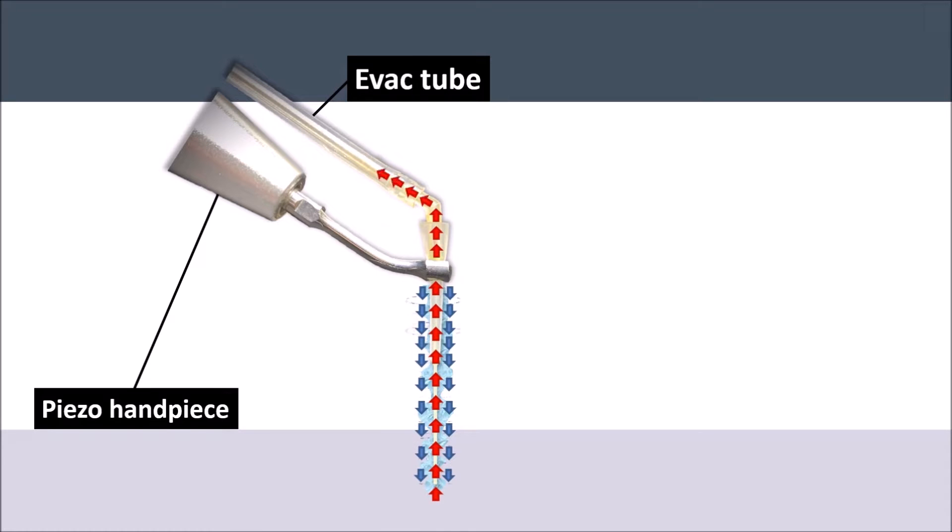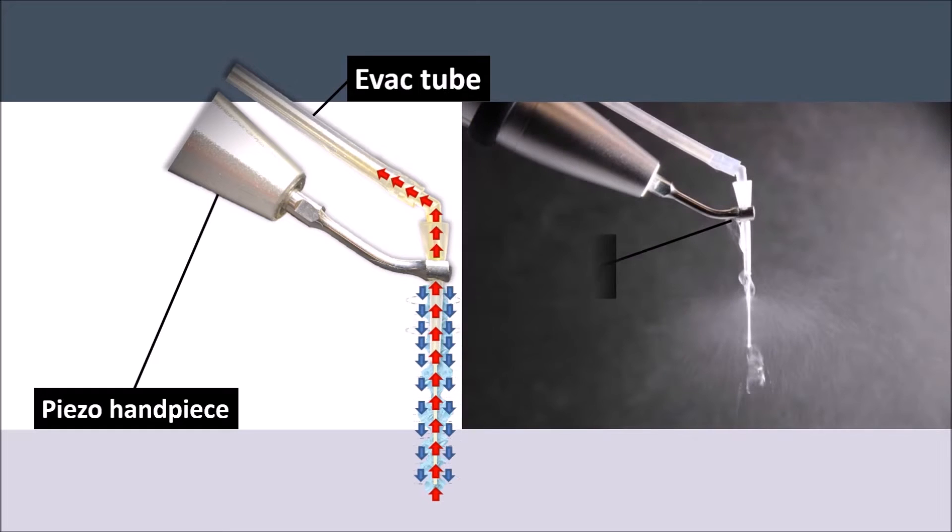The piezo ultrasonic connector has a passageway that provides a single continuous flow path for delivering fluid to the pulp chamber and root canal, projecting the liquid at the cannula's external surface.